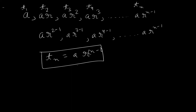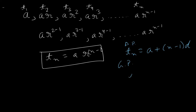We can draw analogies between GP and AP at every step. In an AP, by the time we reach the nth term, we add the common difference d to the first term a exactly n−1 times. Similarly, in a GP, instead of adding the common difference, we multiply the first term by the common ratio r exactly n−1 times.